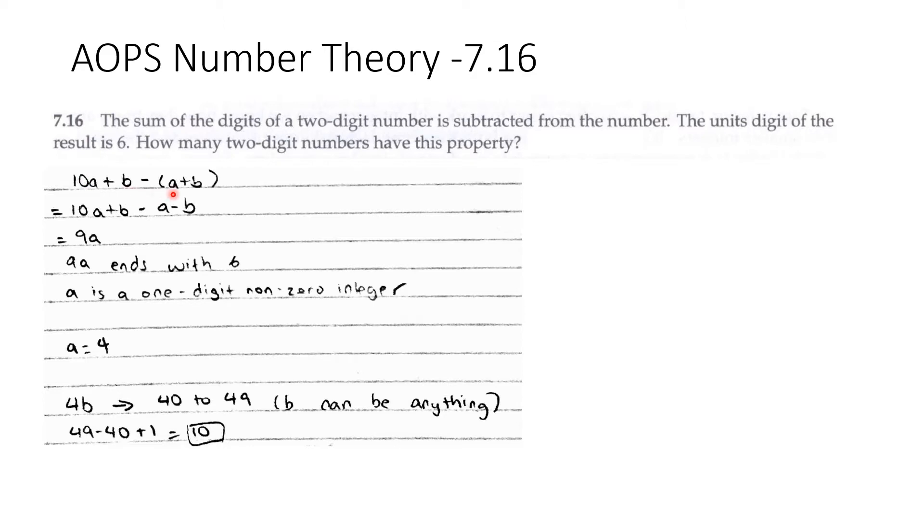So 10a plus b minus (a plus b), which equals 10a plus b minus a minus b, which equals 9a.